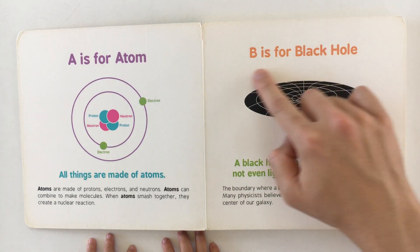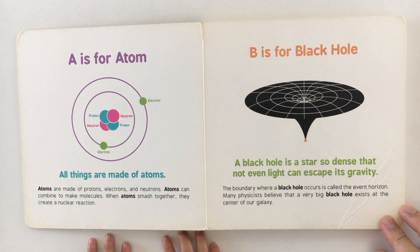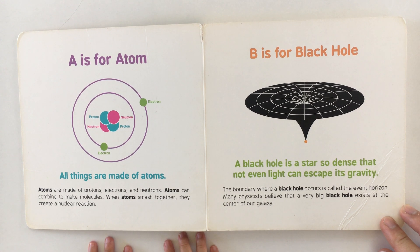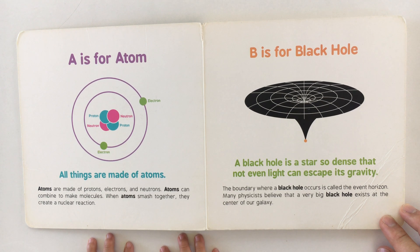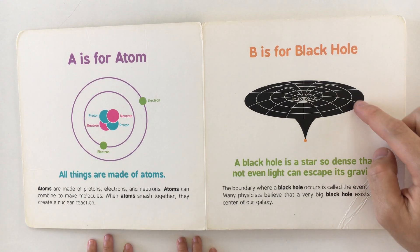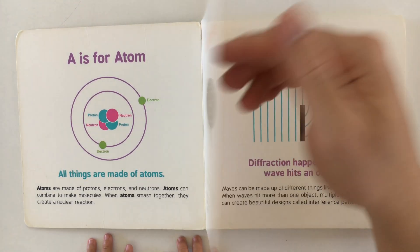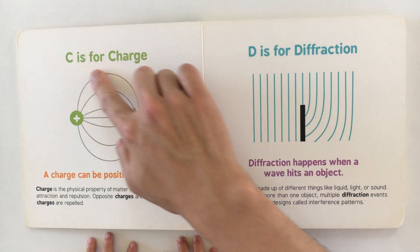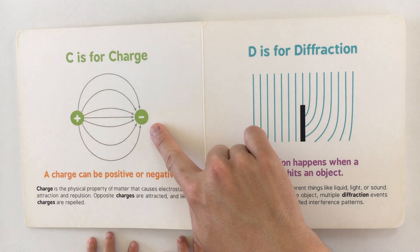B is for black hole. A black hole is a star so dense that not even light can escape its gravity. The boundary where a black hole occurs is called the event horizon. Many physicists believe that a very big black hole exists at the center of our galaxy. See — all the lines are going down into the black hole.